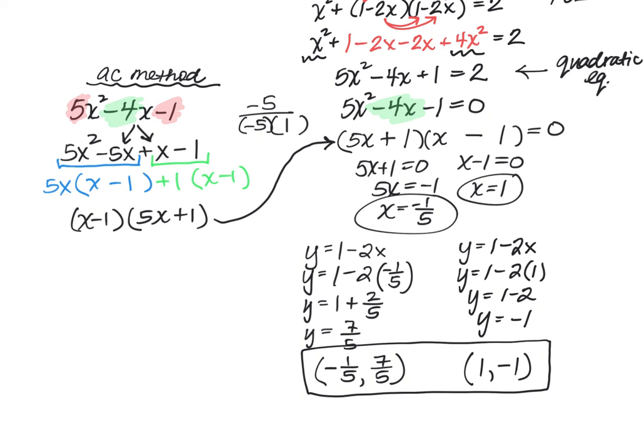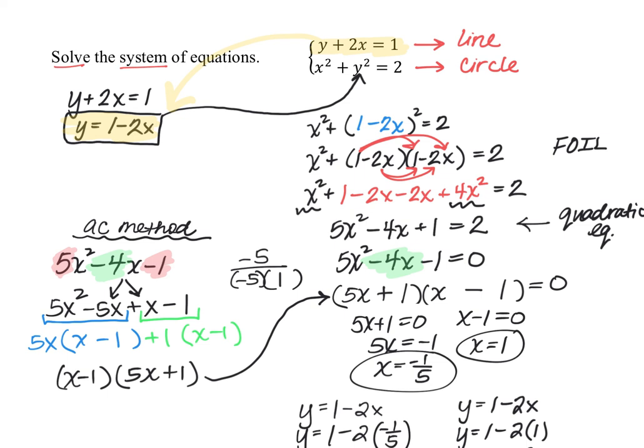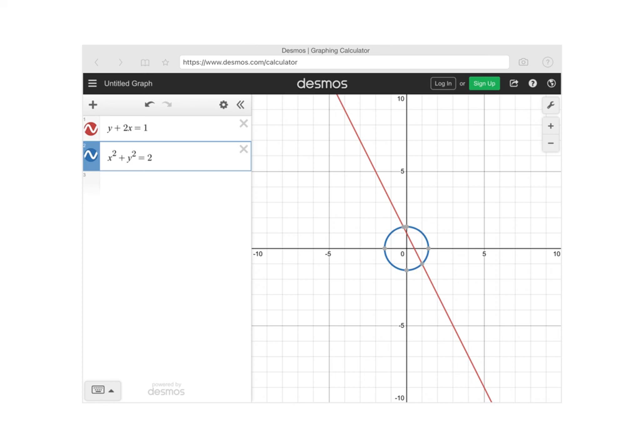As always, I highly encourage you to either get your graphing calculator or open up Desmos and actually graph the line and the circle and verify graphically that our solutions look accurate. I opened up Desmos and inputted both of these curves. You can see we definitely have a line and a circle, and it's a nice quick visual to verify that our algebra was accurate because we can see our intersections—one here and one here—and it certainly looks like these are accurate according to the solutions we got algebraically.